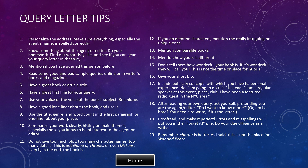Have a great book or article title. Have a great first line for your query letter. Use your voice or the voice of the book's subject. Be unique. Have a good one-liner about the book and use it. Use the title, genre, and word count in the first paragraph or one-liner about your piece. Summarize your work clearly, hitting on main themes, especially those you know to be of interest to the agent or editor.